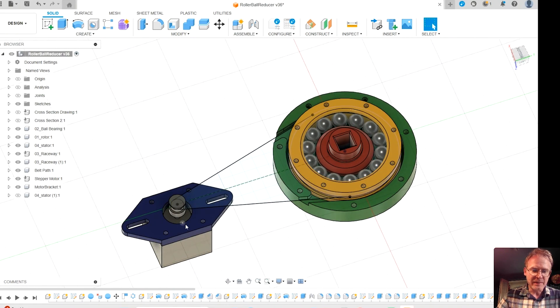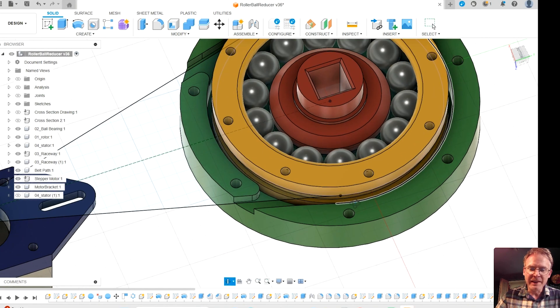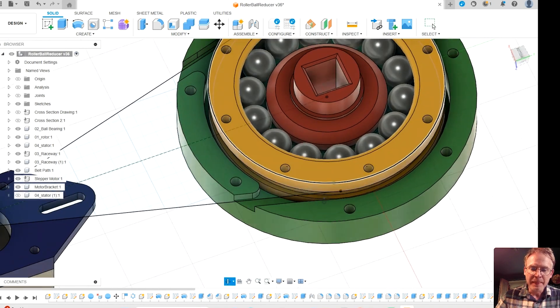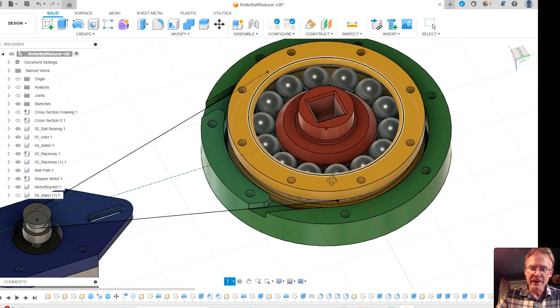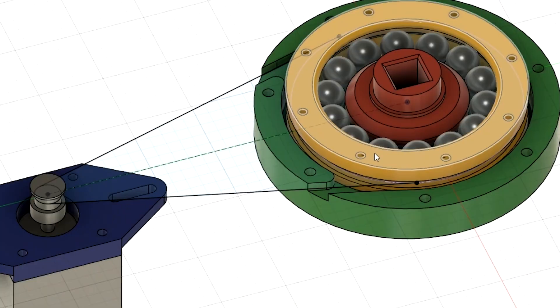Here's the stepper motor, and it's got a belt that wraps around the outside of the yellow thing, which is just really a retainer. It's like a couple of raceways for the ball bearings.